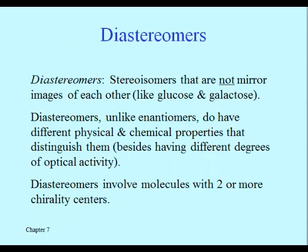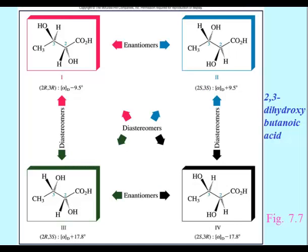Those last two molecules are diastereomers of each other — they're stereoisomers that are not enantiomers. Having more than one chiral carbon is a requirement for diastereomers, and they won't be mirror images in the way that enantiomers are. Diastereomers will have different physical properties — different melting points if they are solids, different boiling points if they're liquids — and so they are much easier to separate from one another than enantiomers are. This last slide shows an example of a set of diastereomers.